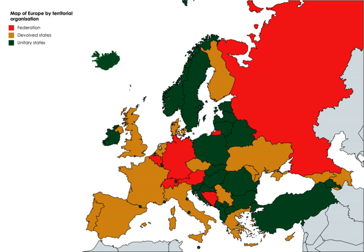On 1 January 1901, the nation-state of Australia officially came into existence as a federation. The Australian continent was colonised by the United Kingdom in 1788, which subsequently established six eventually self-governing colonies there. In the 1890s, the governments of these colonies all held referendums on becoming the unified, self-governing Commonwealth of Australia within the British Empire. When all the colonies voted in favour of federation, the Federation of Australia commenced, resulting in the establishment of the Commonwealth of Australia in 1901. The model of Australian federalism adheres closely to the original model of the United States, although through a parliamentary Westminster system rather than a presidential system.